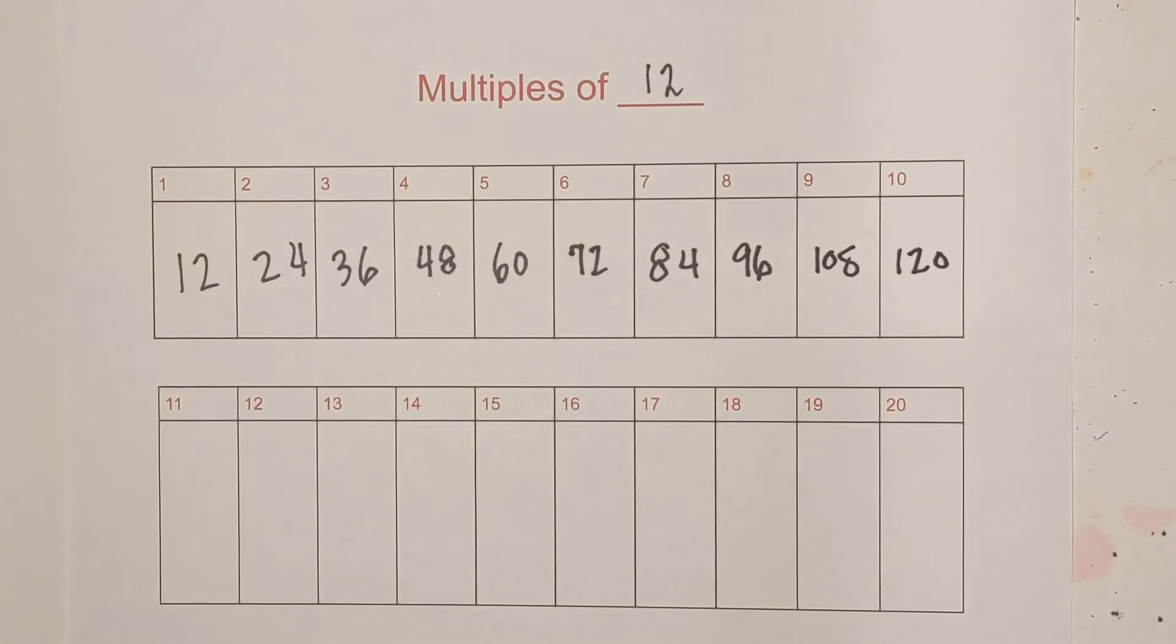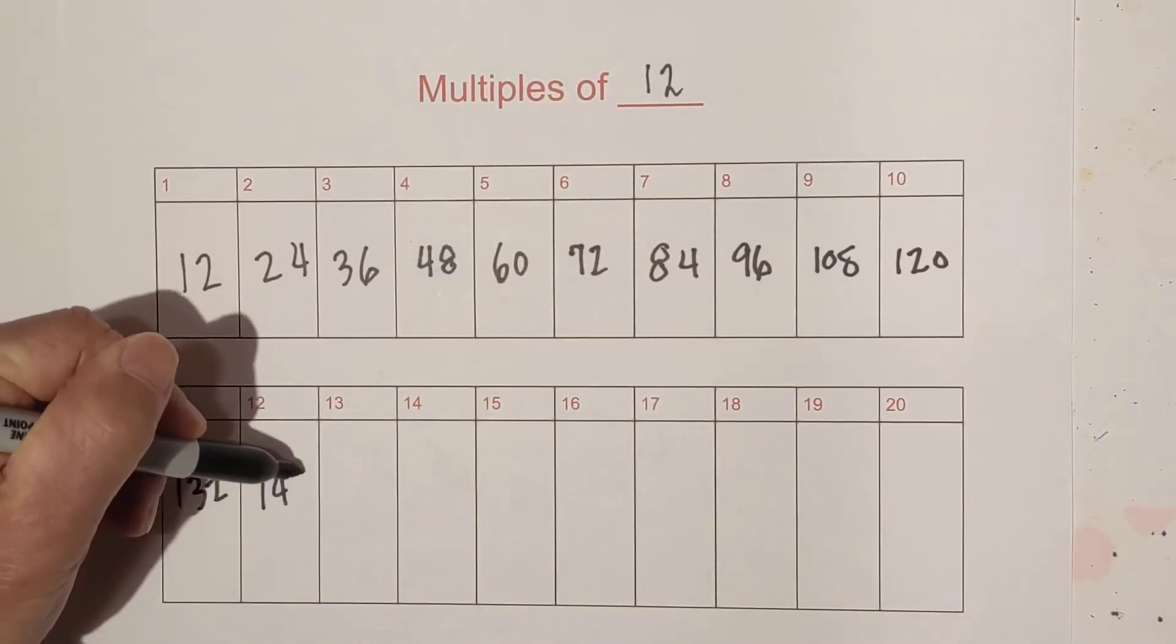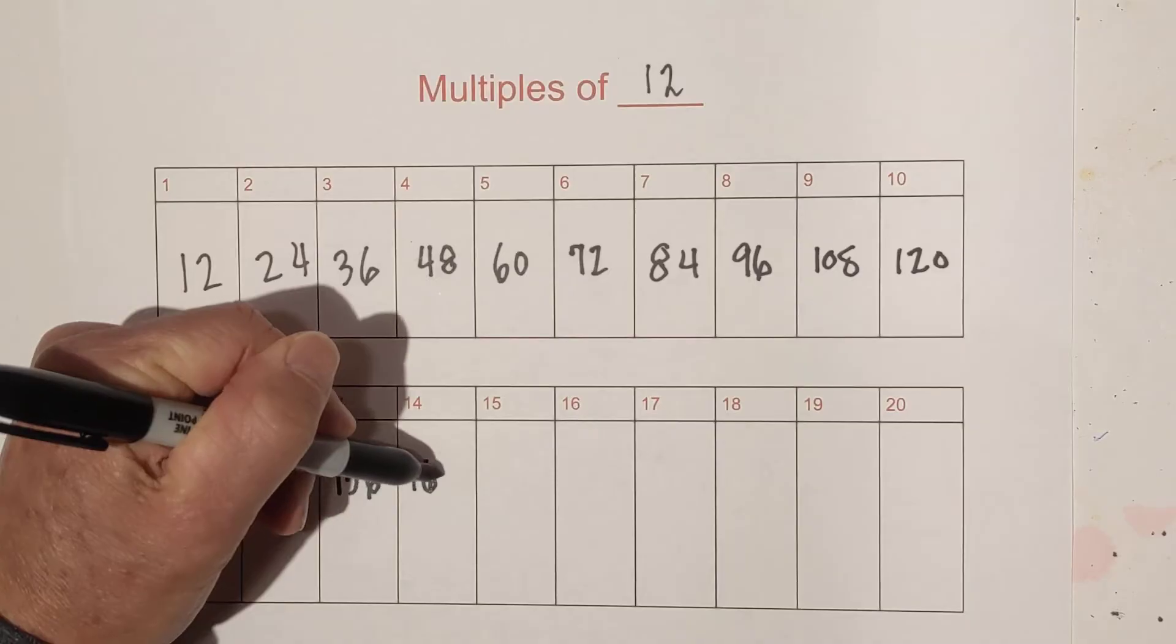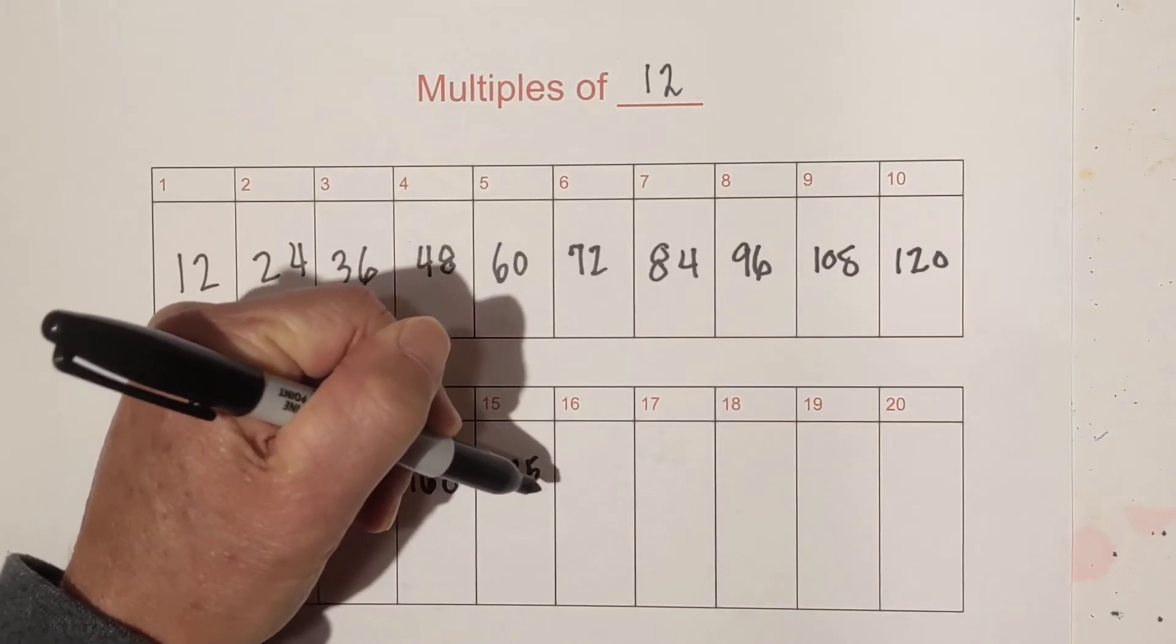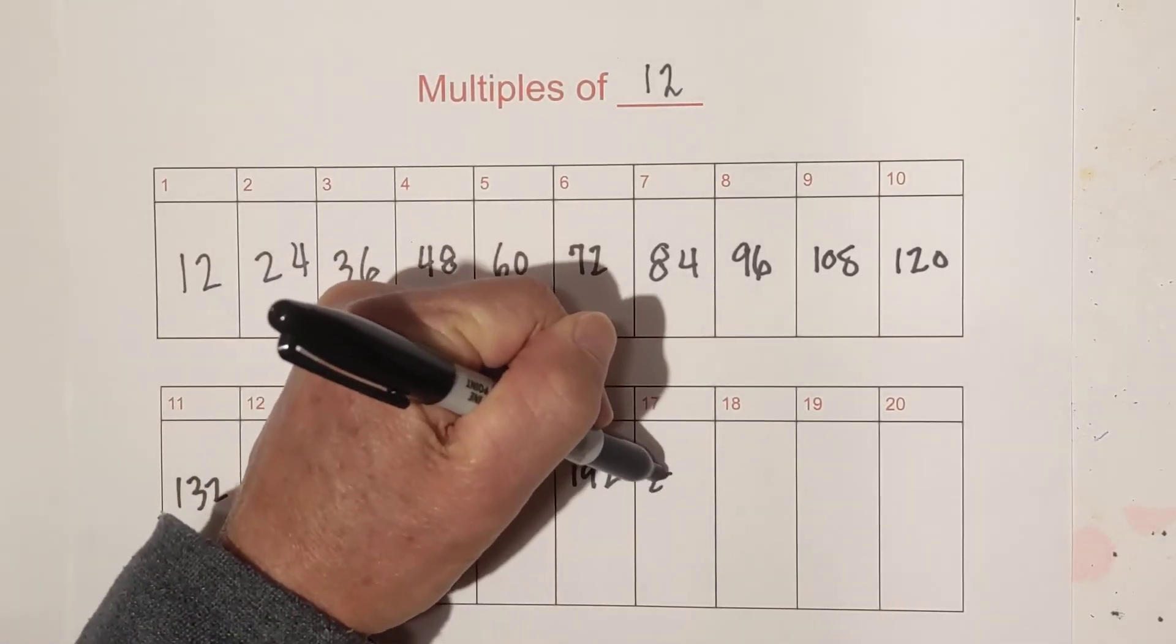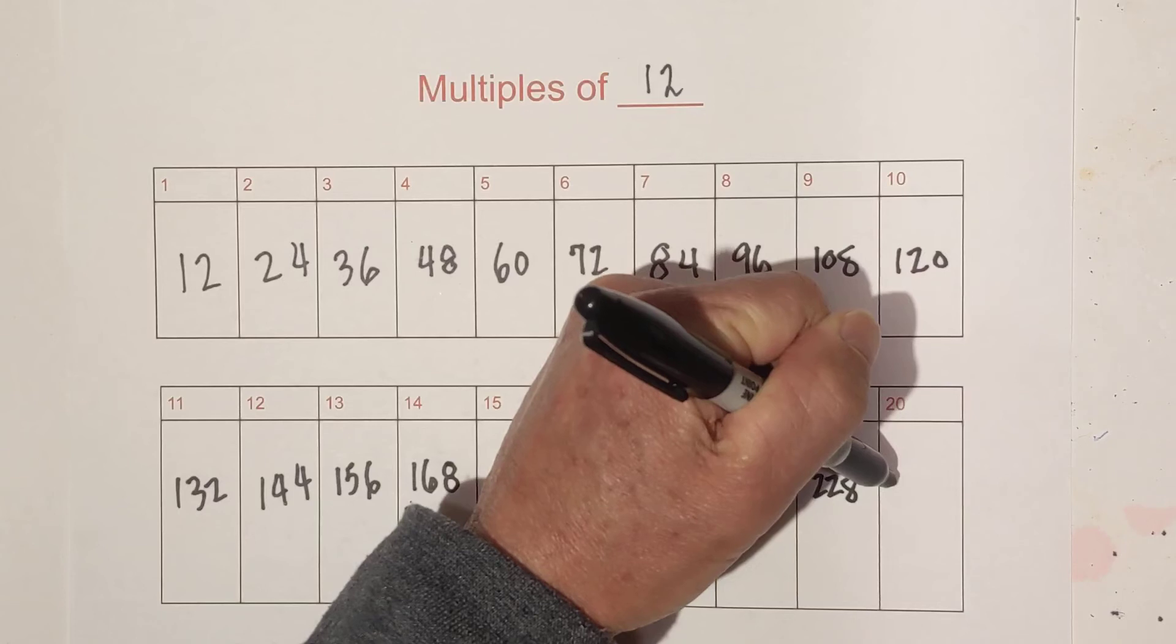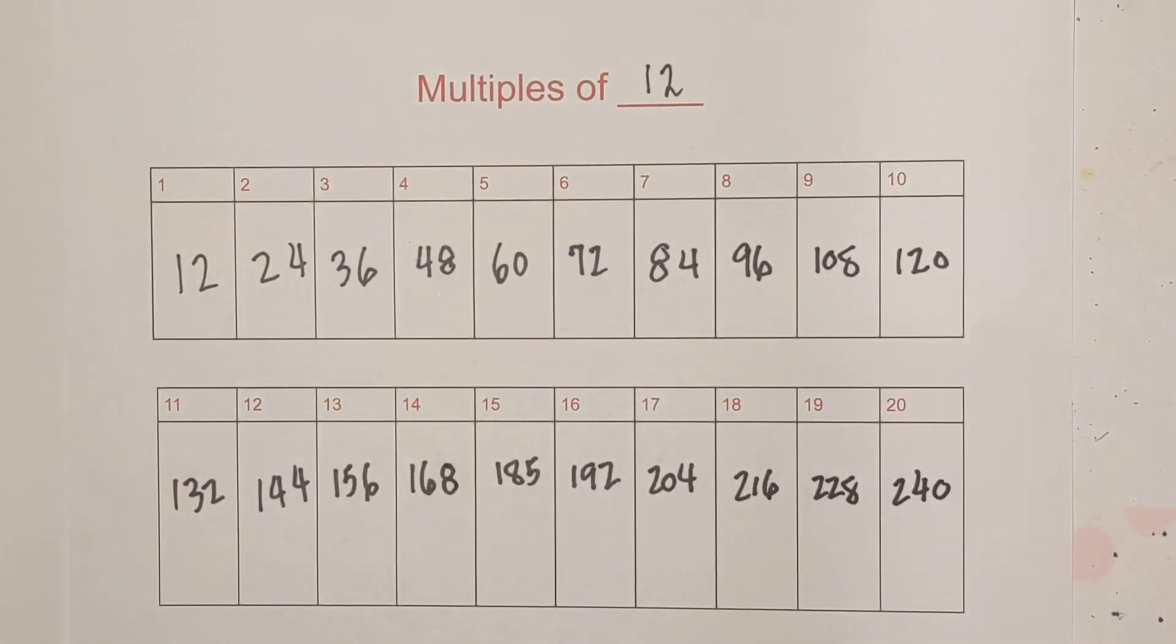And now let's see how this repeats. Now we have 132, 144, 156, then we have 14 times 12 is 168, then we have 180, then we have 192, we have 204, 216, 228, and then 20 times 12 is 240. So there we go,